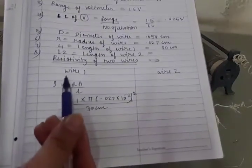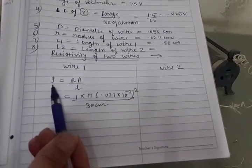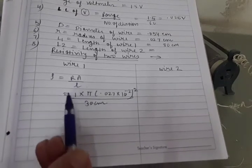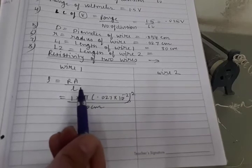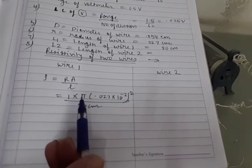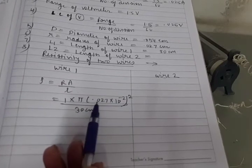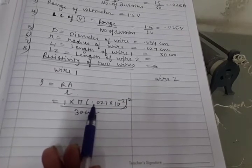After that now, in the calculations, we have to calculate resistivity of the first wire, which is by ρ equals R A by L formula. R is coming 1 ohm. Area of cross section is π R square and this radius will be given to you of the wire. This is measured by the screw gauge.